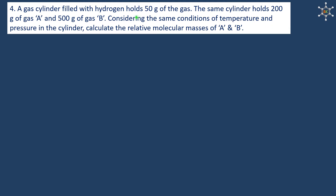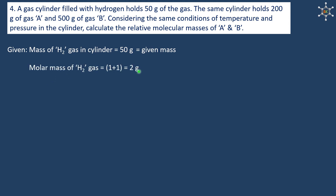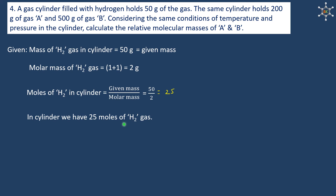A gas cylinder filled with hydrogen holds 50 grams of the gas. The same cylinder holds 200 grams of gas A and 500 grams of gas B under the same conditions of temperature and pressure. The molar mass of hydrogen gas is 2 grams per mole. So the moles of hydrogen in the cylinder is 50 divided by 2, which is 25 moles.